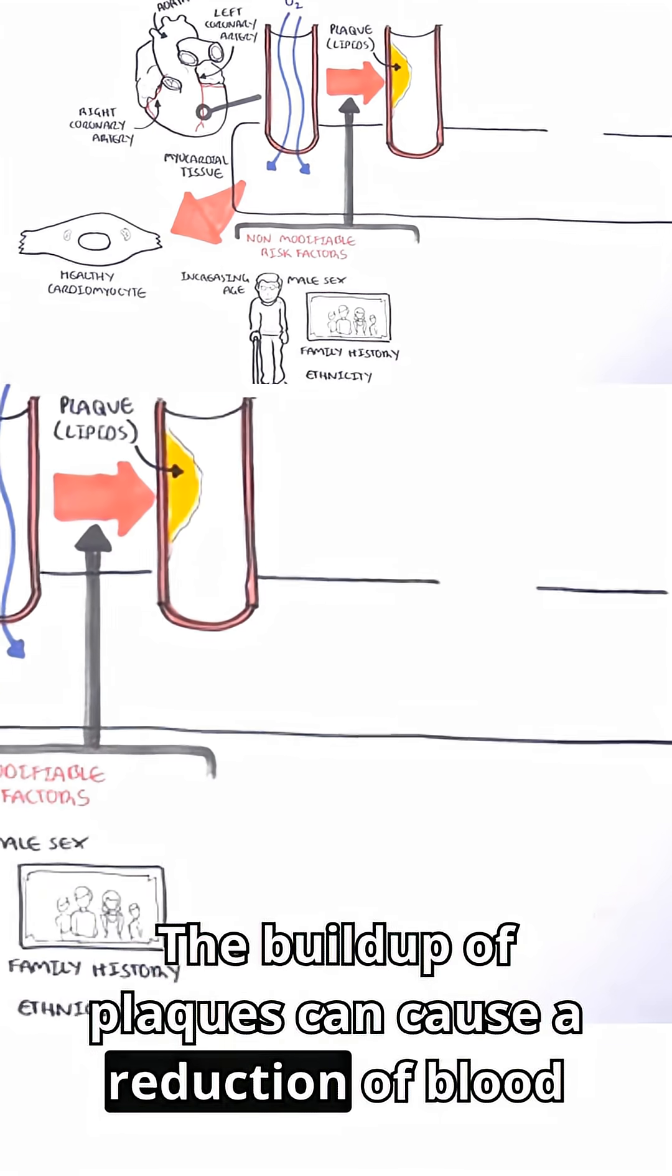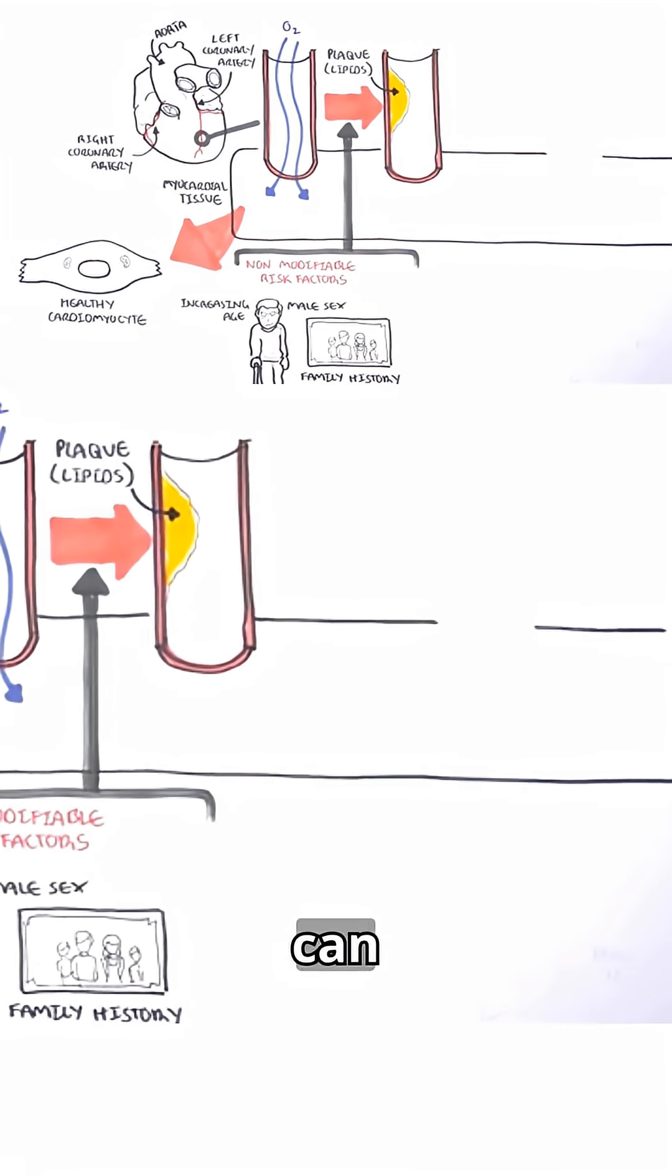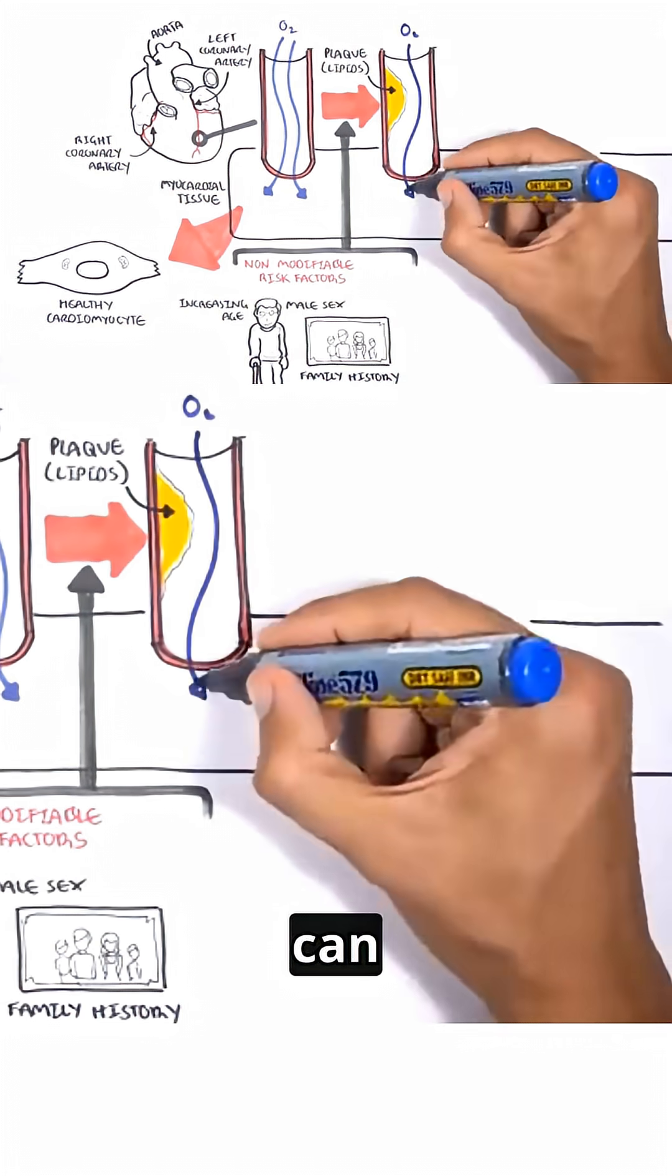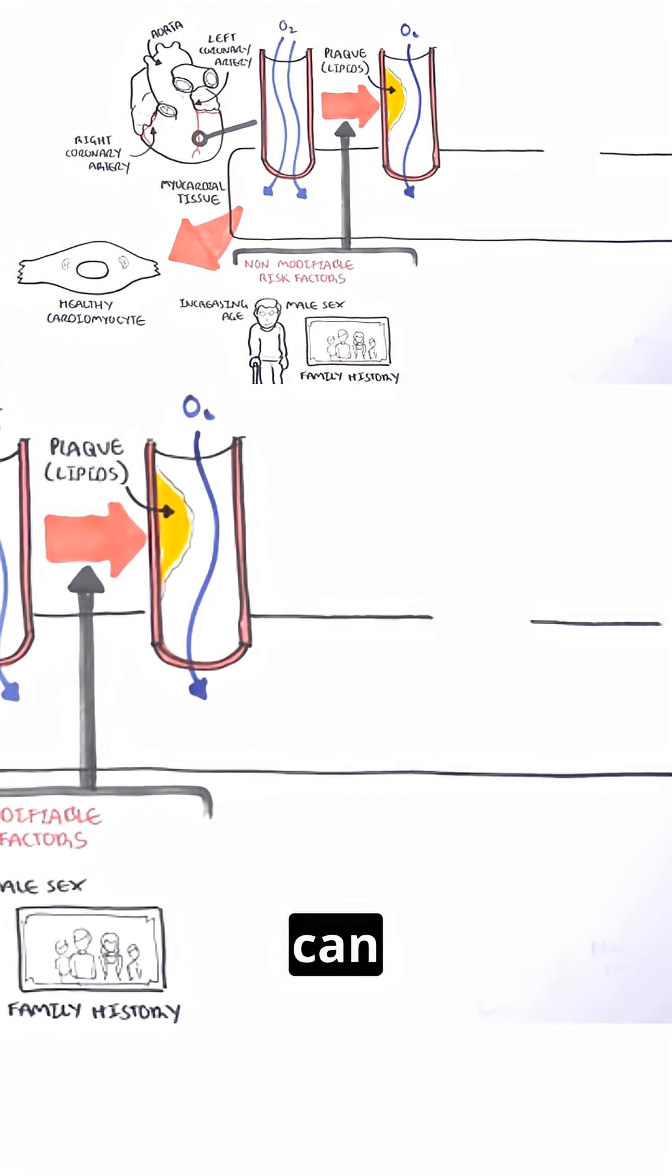Now, the buildup of plaques can cause a reduction in blood flow to the area, to the cardiomyocytes, leading to poor oxygen supply.